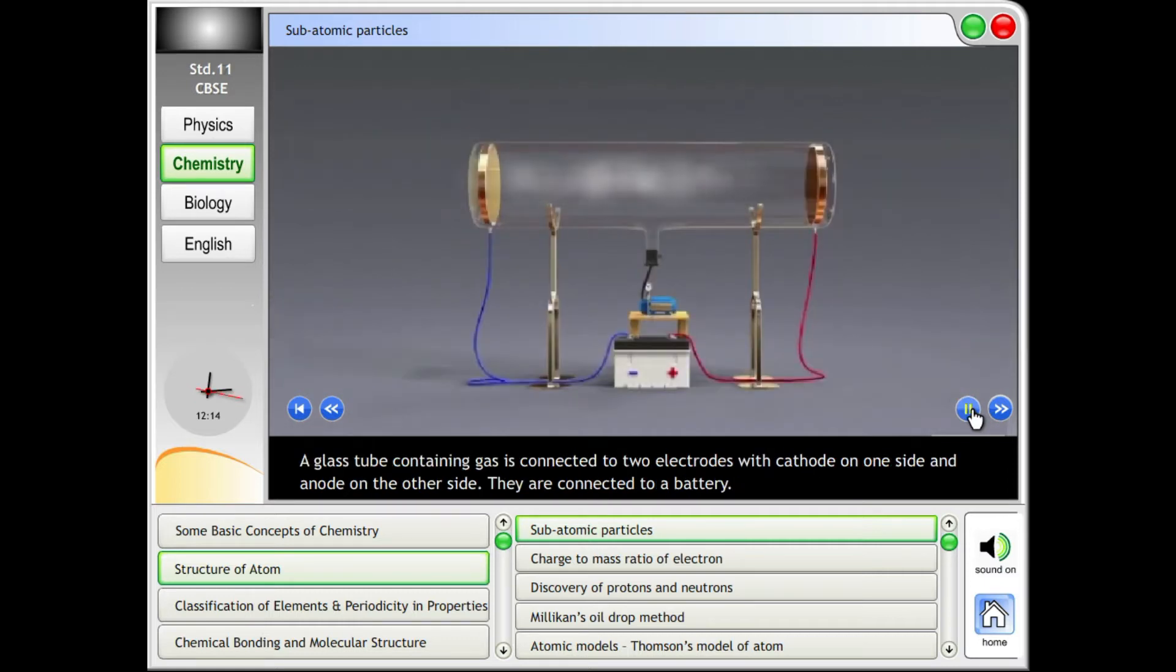A glass tube containing gas is connected to two electrodes with cathode on one side and anode on the other side. They are connected to a battery.